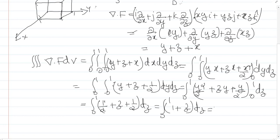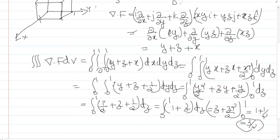Finally, integrating z + 1 with respect to z from 0 to 1 gives z²/2 + z, evaluated from 0 to 1, which equals 1/2 + 1 = 3/2. So the outward flux of the vector field is 3/2. We will do more problems in the next video.